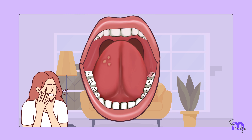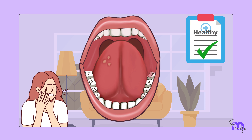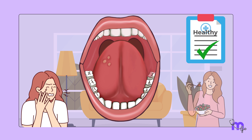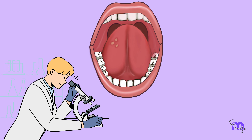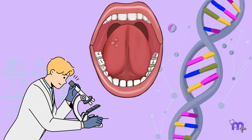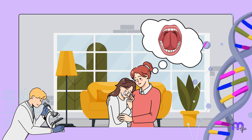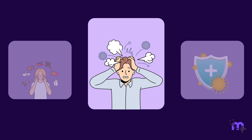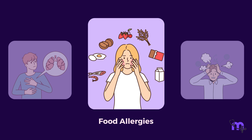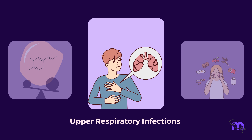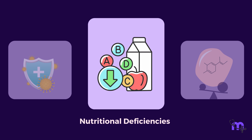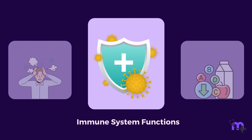RAS is a disorder that causes recurring ulcers to form on the oral mucosa in people with no underlying systemic diseases who are otherwise healthy. Recent studies show several factors associated with RAS outbreaks, which include heredity — which in Maya's case stands true, as having a family member with RAS increases the chances of developing it — as well as stress, food allergies, upper respiratory infections, hormonal changes, nutritional deficiencies, and immune system function.